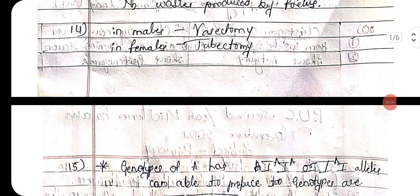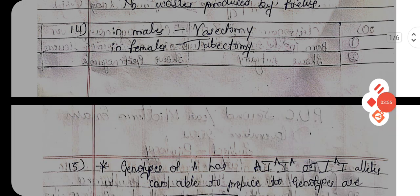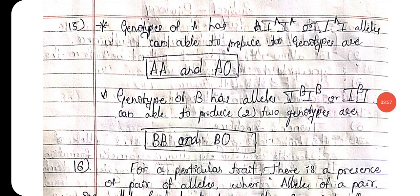Fourteenth one: the permanent birth control methods. In case of males it is known as vasectomy, and in case of females it is known as tubectomy.